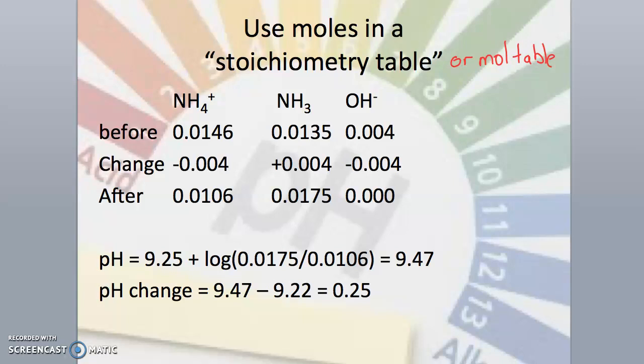Since we have far more acid than the amount of base added, the base will run out. So we can subtract 0.004 from the OH- leaving us with no base. This base did consume 0.004 moles of our ammonium ion, which produced 0.004 moles of ammonia.